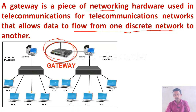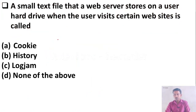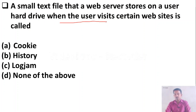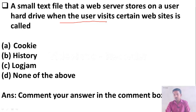A small text file that a web server stores on a user's hard drive when the user visits certain websites is called — Option A: cookie, Option B: history, Option C: logjam, Option D: none of the above. This question is for you — please comment the answer in the comment box.